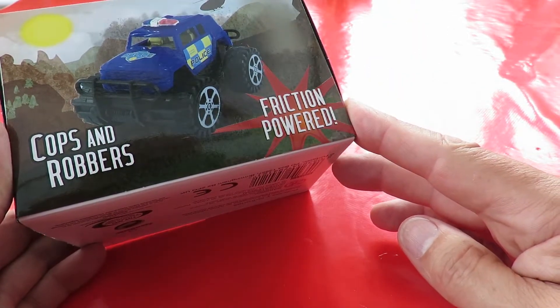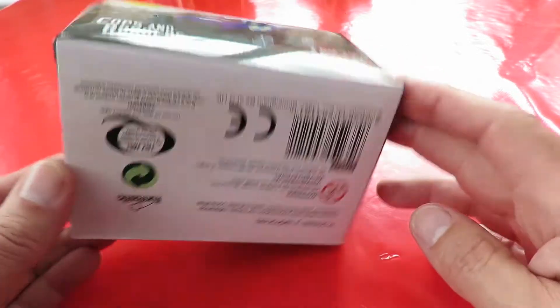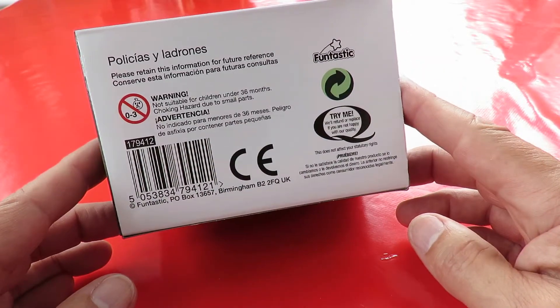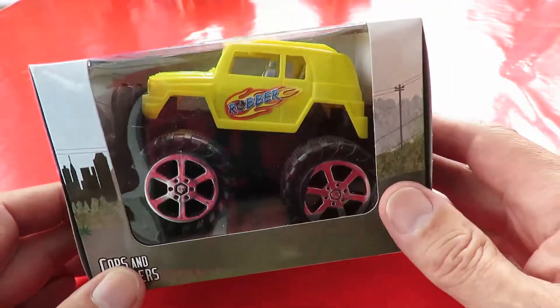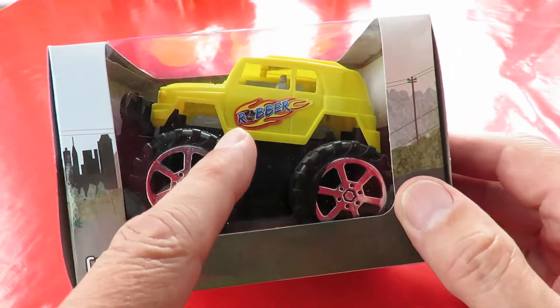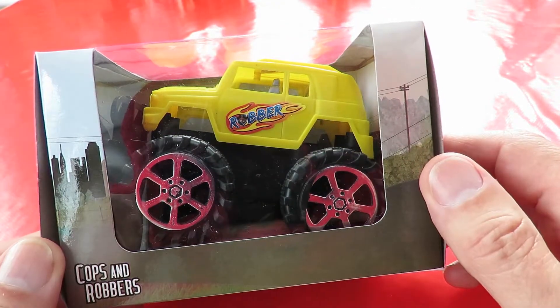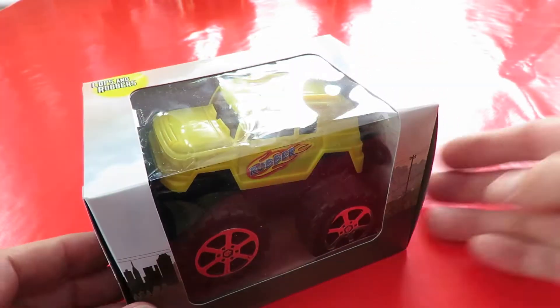Friction-powered. Okay I mean this is just like real life. All robbers have robber written on the side of their car so you know which ones are cops and which ones are robbers.